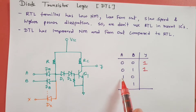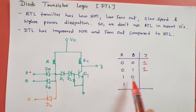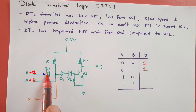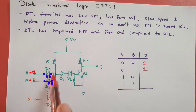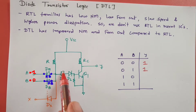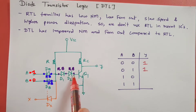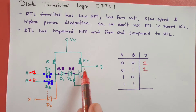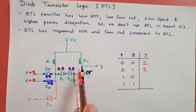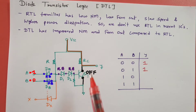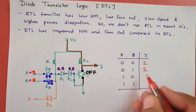In the third case, A = 1 and B = 0. Here DA is in reverse bias and DB is in forward bias. VCC finds a path through DB, so D1 and D2 remain in reverse bias. With D1 and D2 in reverse bias, base current to Q1 is minimum, Q1 is off, and the output is at VCC — active high — so the output is logic 1.